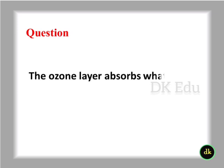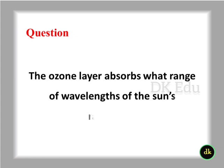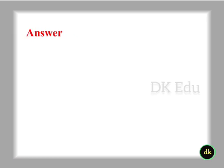The ozone layer absorbs what range of wavelengths of the sun's radiation? 200 to 310 nanometers.